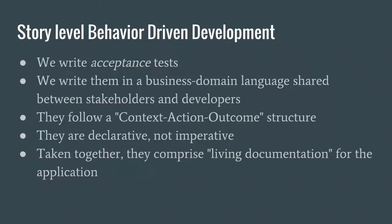There's a book called The Cucumber Book — I read The Cucumber Book. It outlines the philosophy behind this kind of story-driven process. The process involves writing acceptance tests for various features the software is supposed to have — once the test passes, the feature is acceptably implemented. We write them in a business-domain language shared between stakeholders and developers, instead of talking about HTML elements, classes, or even Drupal language about nodes and blocks. We try to develop a language that makes sense to the project folks.